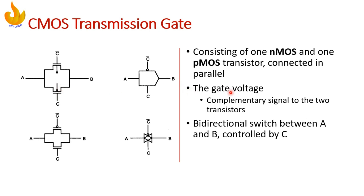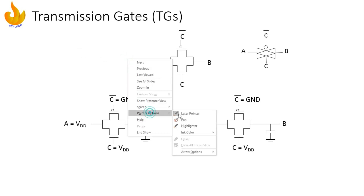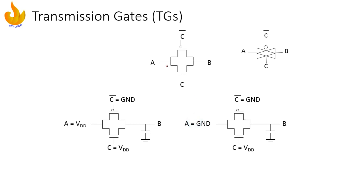The gate voltage controls the flow of input and output. A complementary signal is given to both transistors — if there is C on one side, then C-bar on the other. It is a bi-directional switch between A and B which is controlled through C.